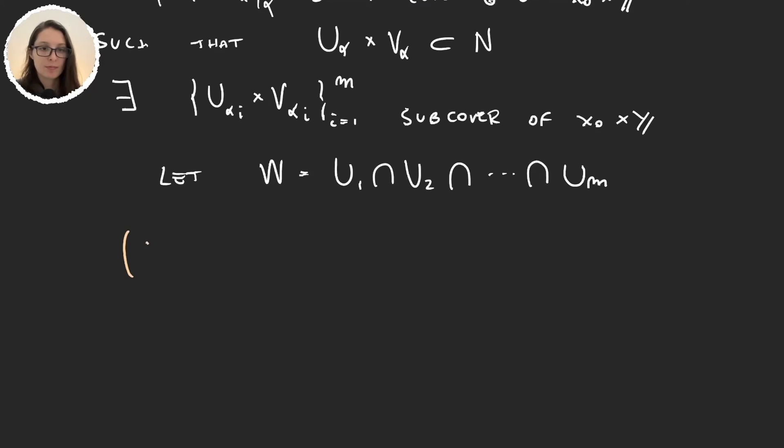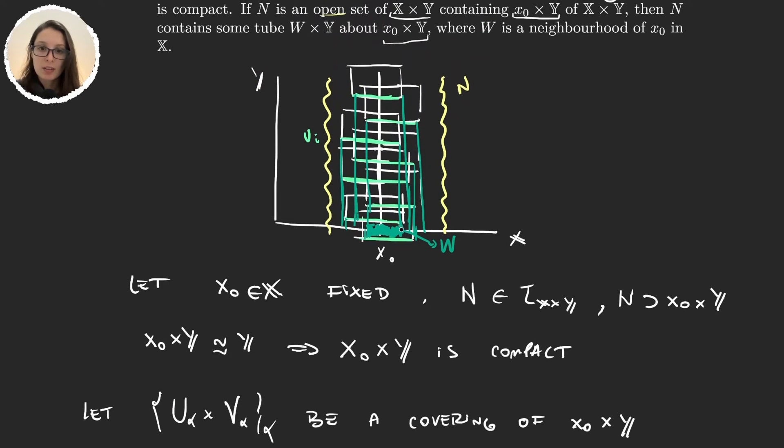So let's prove that. For this what we have to do is take x times y in W times Y, and prove that it's an element in N. So what we are doing is this tube here, this is W times Y. So I'm taking just any element in there,